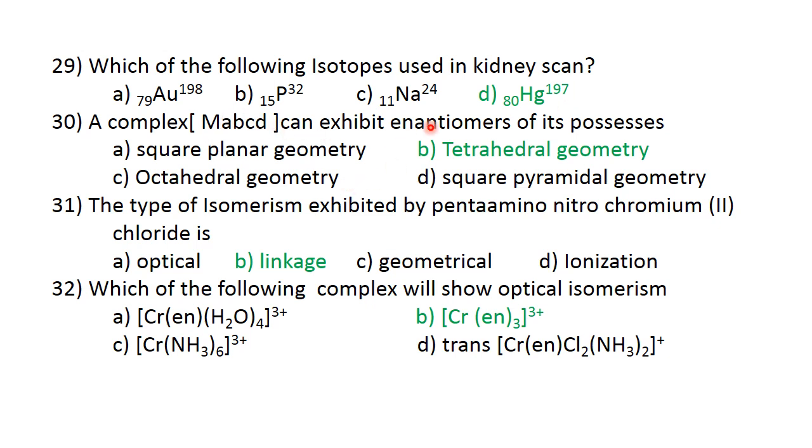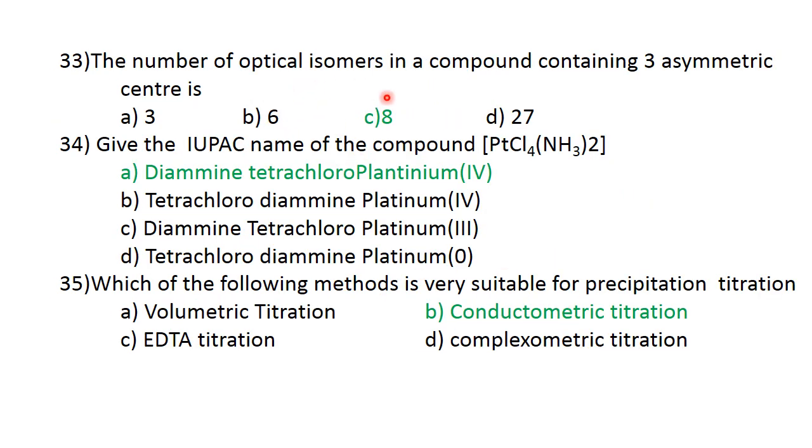A complex of M-A2-B2 can exist as isomers. The type of isomerism exhibited by pentaamino-nitro-chloro-chromium chloride. If you have ethylene diamine, it is possible. Then B-R-E-N3, this is bidentate ligand. This shows optical isomerism. Therefore, option B is correct. The number of optical isomers in a compound containing 3 asymmetric carbon atoms is 2 power 3, equal to 8. C is the correct answer.